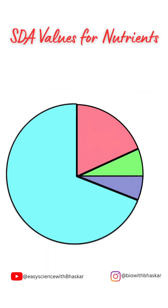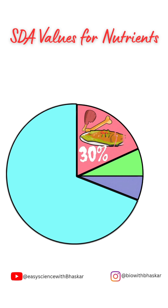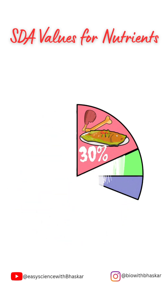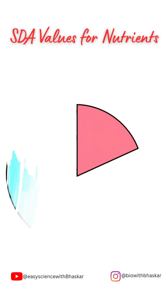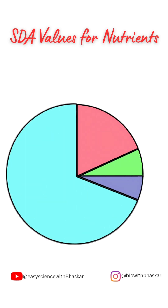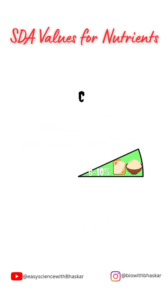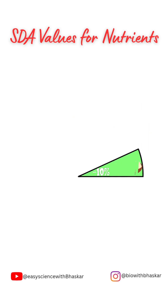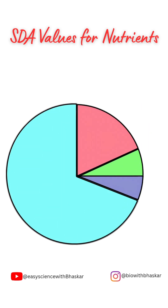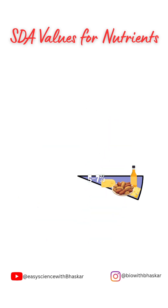Today we will understand SDA values for different nutrient types. Proteins cause the highest effect, about 30% of energy expenditure. Carbohydrates cause 5-10% of energy expenditure, as you can see in the pie chart. Fats cause the lowest, about 5-7% of energy expenditure.